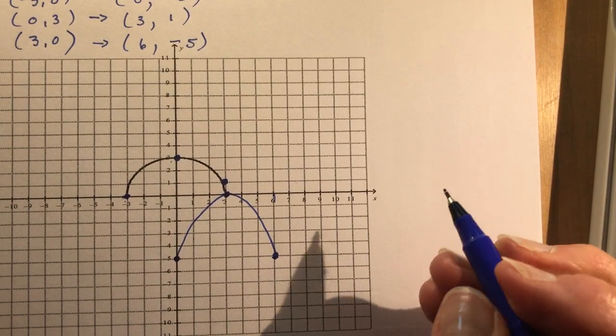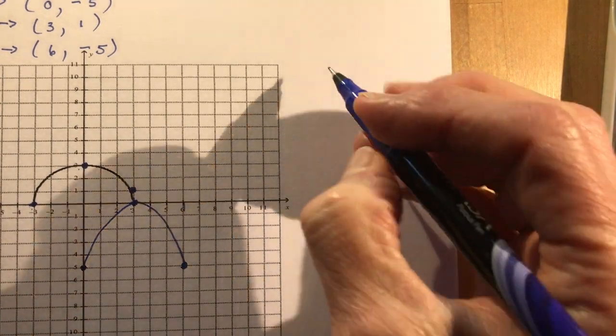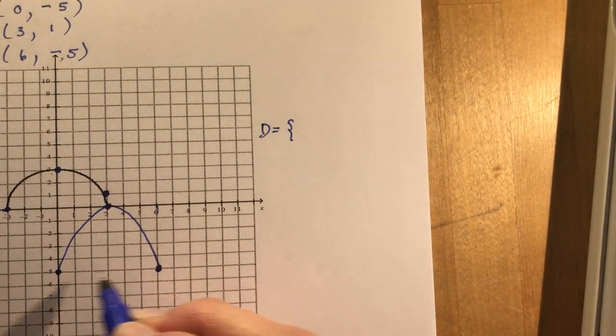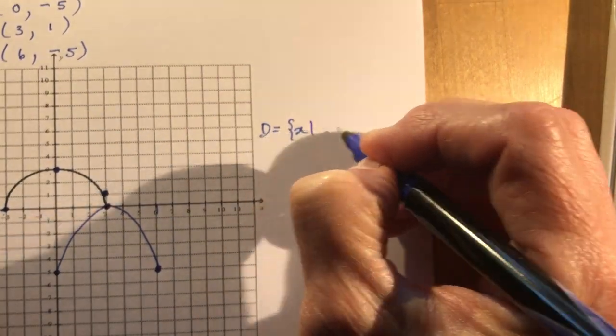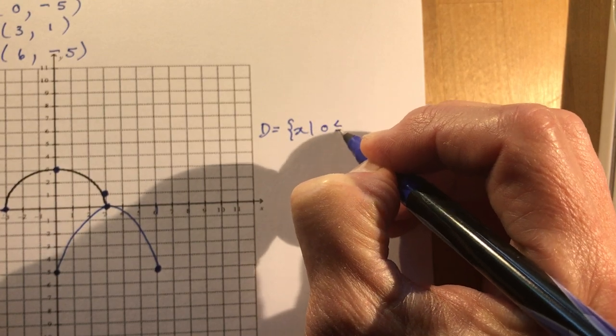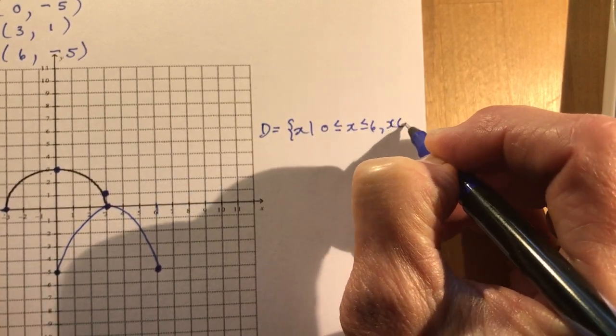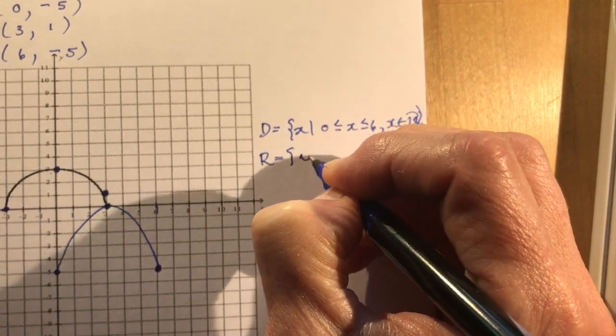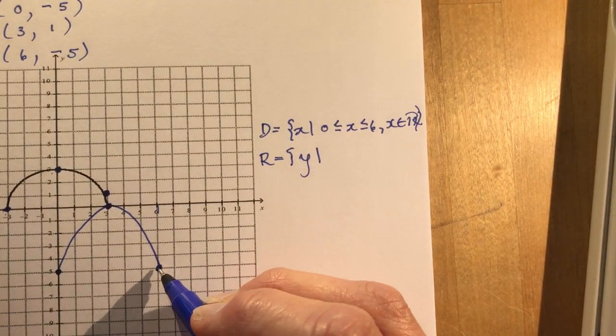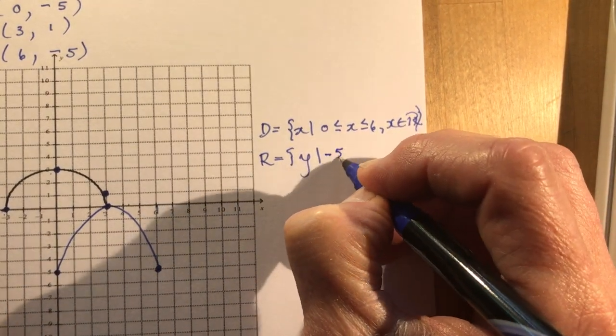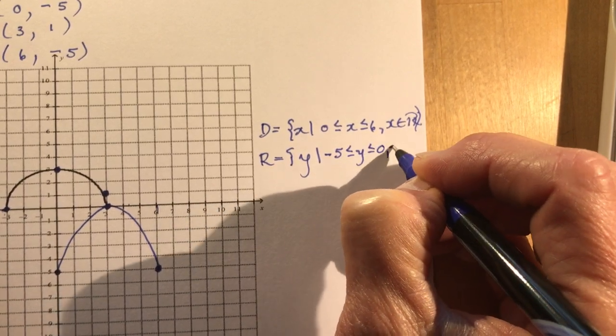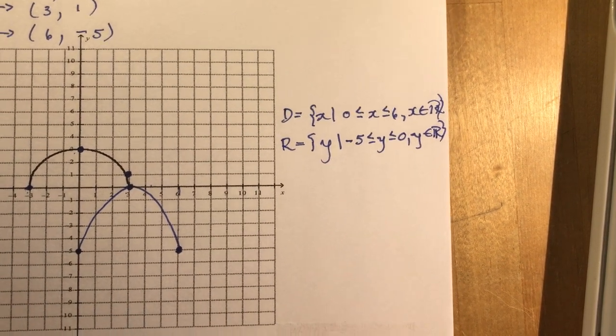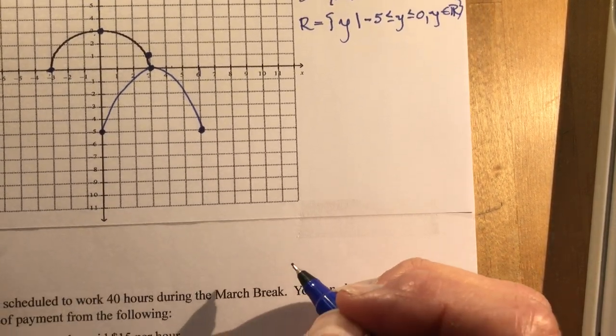The second part is to state the domain and range. The domain is going to be x goes from 0 to 6. So 0 to 6, x is an element of real numbers. And my range is going to be y from minus 5 to 1. Y is an element of real numbers. Okay, so that wasn't so bad. There's our 5 points. We're clever.